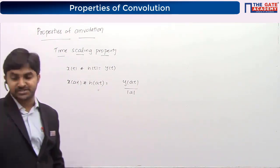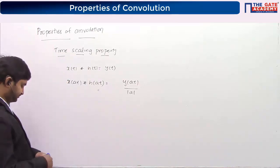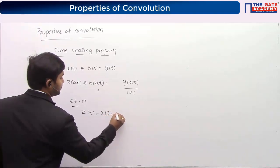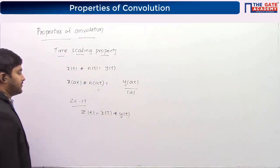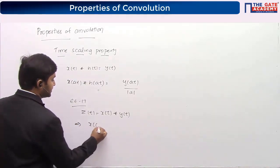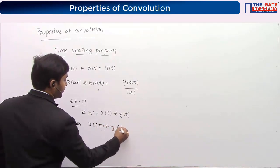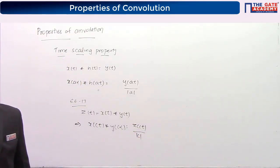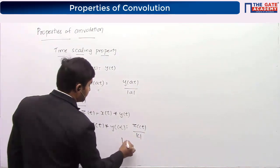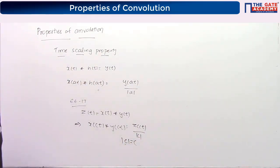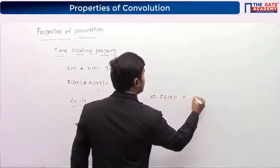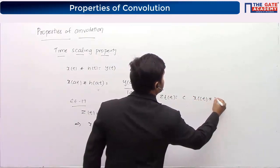The answer is option C. Here it is given that z(t) equals x(t) convolved with y(t). From the time scaling property, x(ct) convolved with y(ct) equals z(ct) divided by mod(c). But c is a positive real number, so mod(c) can be written simply as c, which implies z(ct) equals c times x(ct) convolved with y(ct).